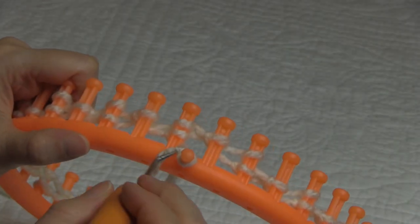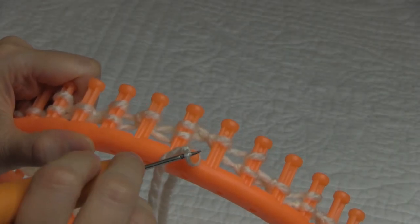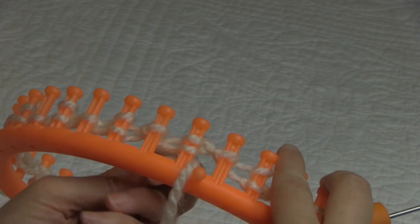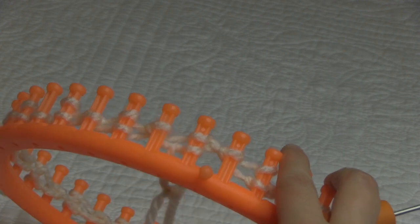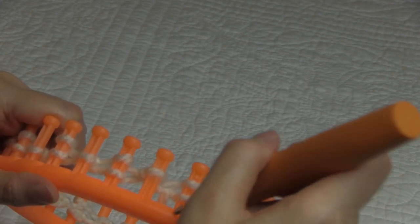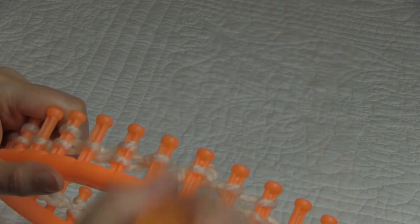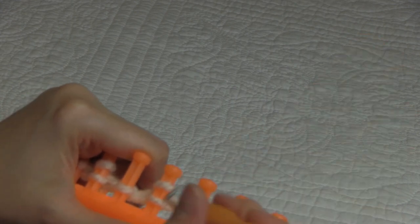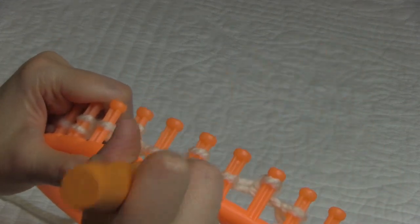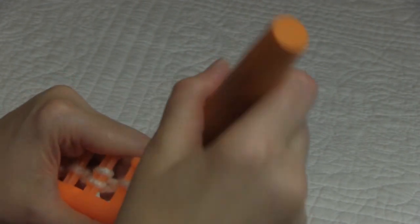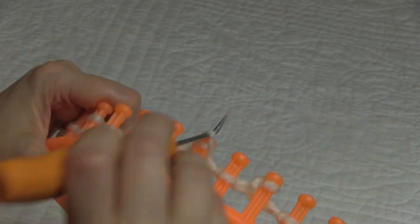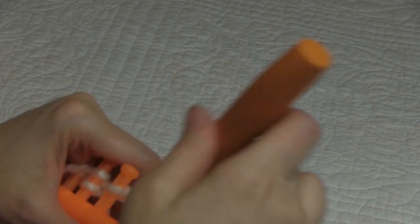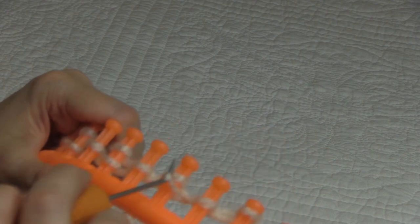Once I finish my first row, you can go ahead and take your starting yarn off the anchor peg and push that to the back, and we'll weave that in at the end of the project. Now I'm going to go back and knit off every peg that has two loops on the peg. And then my first row will be finished and I'm going to continue on for five more rows. So finish your rib stitch brim and meet me back here, and then we'll learn the seed stitch.